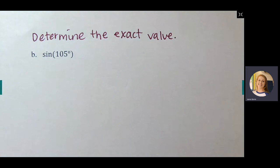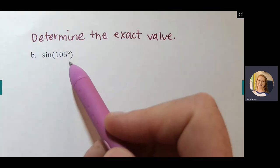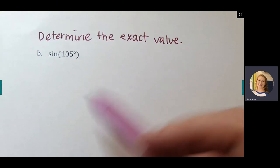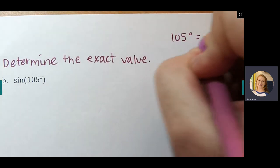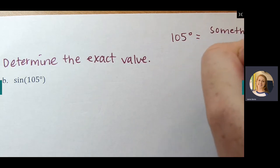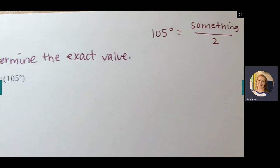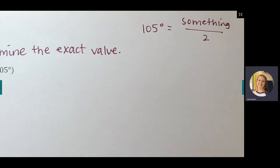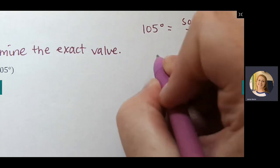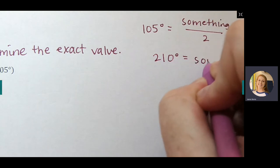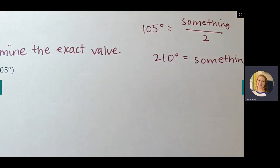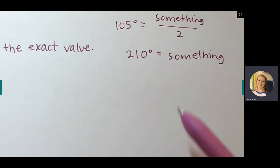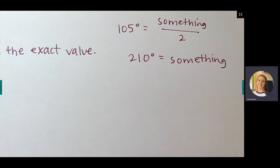Sine of 105 degrees — this one's already in degrees, so we don't have to convert. For a half-angle identity, we write 105° as something over 2. That something would be 210°, which is on the unit circle. This example shows the purpose of the half-angle identity more clearly: rewriting gives us something that is on the unit circle.